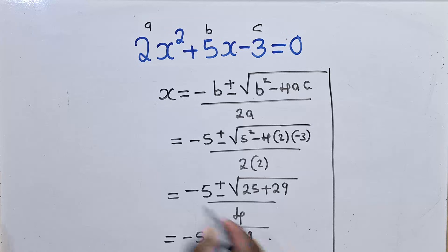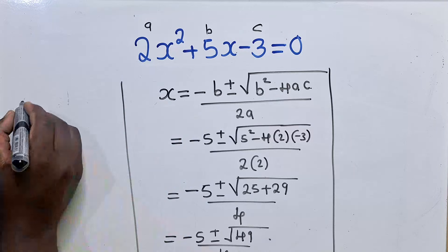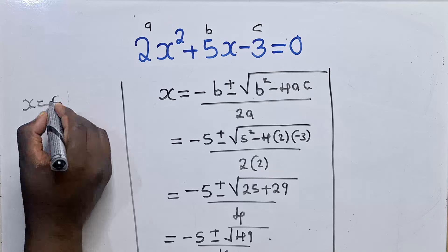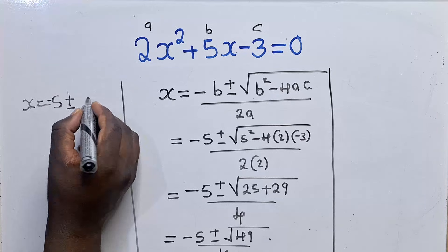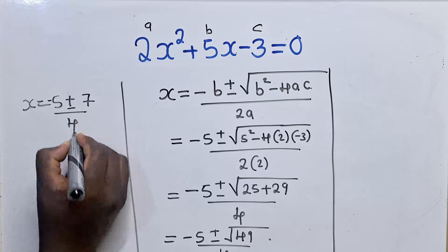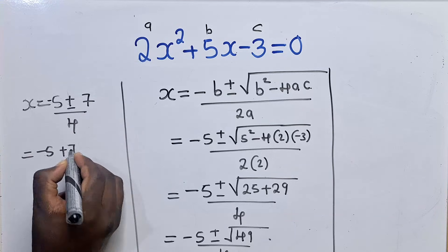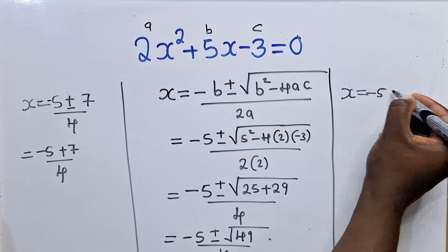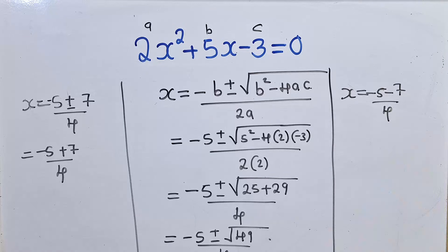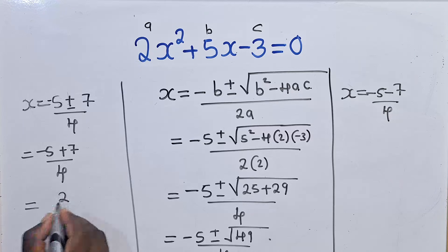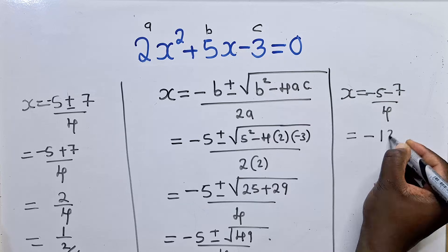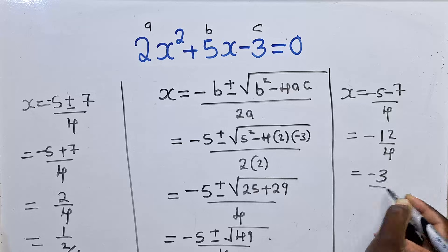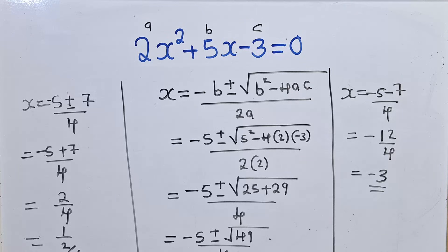Now from here, x = (-5 ± 7) / 4. For the first solution, that is (-5 + 7) / 4 = 2/4, which is just 1/2. For the second, it will be (-5 - 7) / 4 = -12/4, which gives us -3. So this is method number 2.